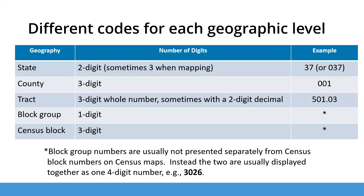FIPS codes look different at different levels of geography. Here are some for commonly used geographies to give you a sense of what they look like. State codes are two digits, county codes are three digits, tracts are three digits — sometimes with a two-digit decimal number — block groups are one digit, and census blocks are three digits.